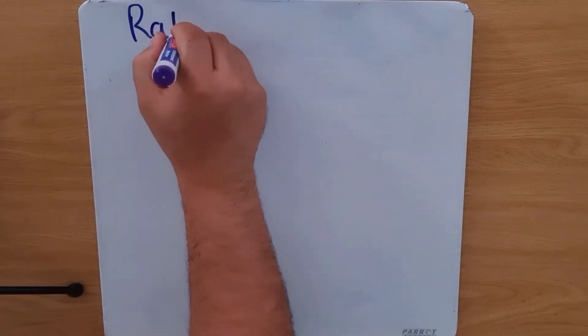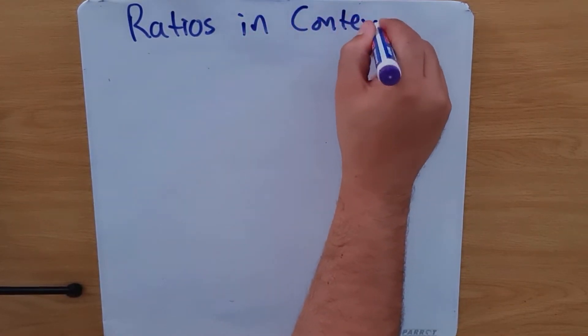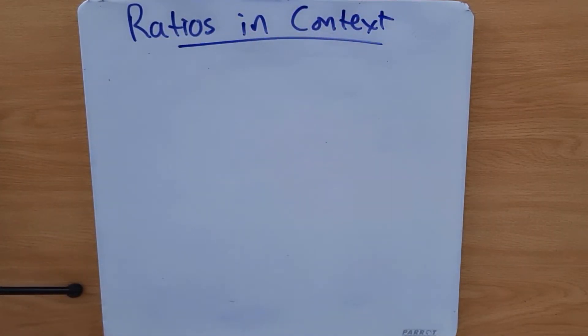Hi there guys, today we're talking about ratios in context. When we talk about ratios in context, we are now talking about ratios where we need to pull these ratios based on a scenario that we are given.